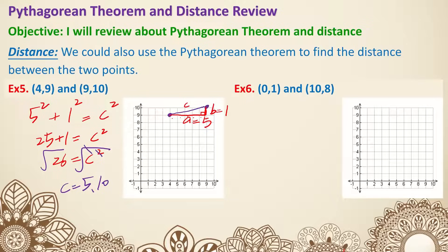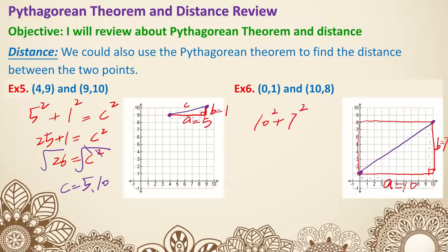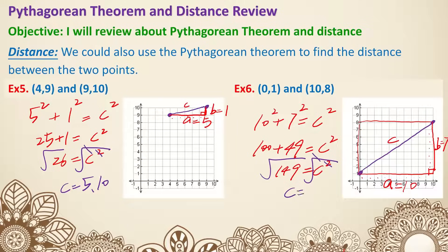That's example five. For example six, the first point is (0, 1) and the second point is (10, 8). We need to find the right triangle. A has a length of 10 and B has a length of 7. So 10 squared plus 7 squared equals C squared. 100 plus 49 equals C squared, so 149 equals C squared. Taking the square root: C equals 12.21. So the distance for example five is 5.10 and for example six is 12.21.